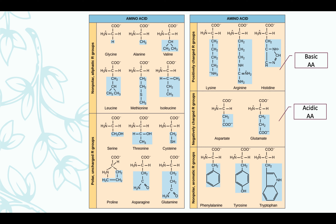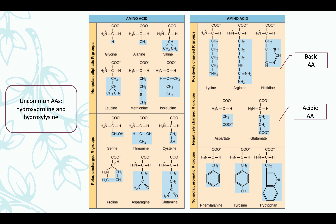Aside from your common amino acids, we also have uncommon amino acids — examples of which are your hydroxyproline and hydroxylysine. They are derived from your common amino acids and are modified via post-translational modification, which we'll cover in the lecture on central dogma. Note that these are found only in a few connective tissue proteins such as your collagen.